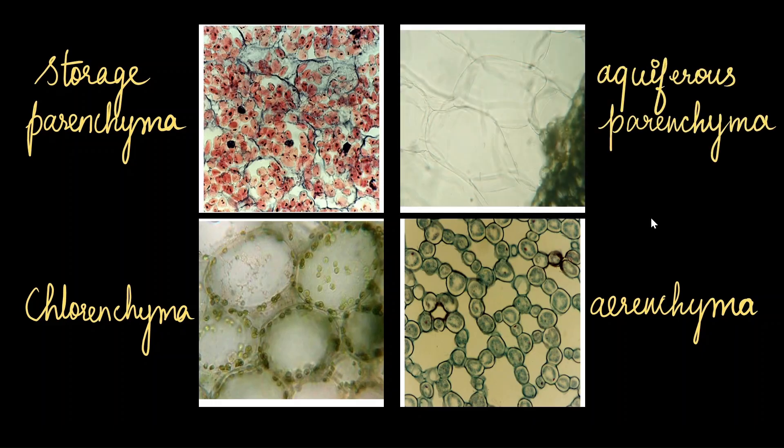A specialized type of parenchyma tissue is the aquiferous parenchyma, which is used for water storage. They are particularly seen in desert plants. We can see that they are almost transparent because their vacuole is holding a lot of water.